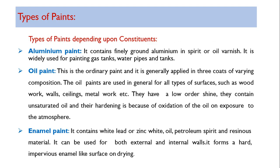Aluminum paint is a paint where finely ground aluminum in spirit or oil varnish is used. It is widely used for painting gas tanks, water pipes, and water tanks. Aluminum paint is costly and consists of fine granules of aluminum in spirit or oil varnish.